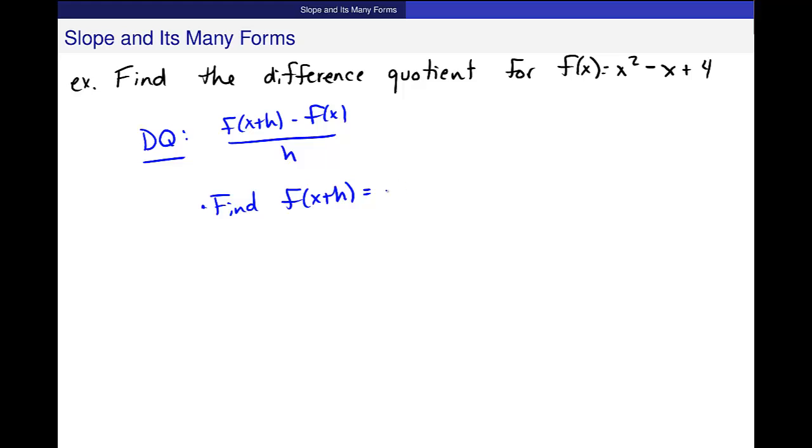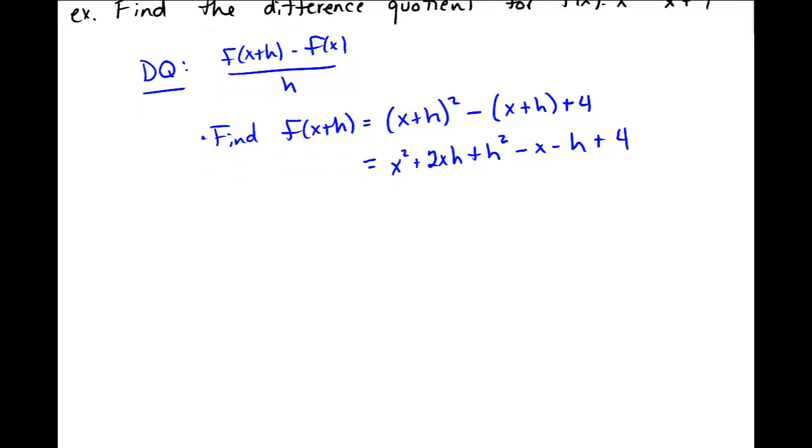And so I plug in x plus h everywhere I see x in the problem. So I get (x + h) quantity squared minus the quantity (x + h) plus 4. And now I'm going to FOIL out this (x + h) squared to get x squared plus 2xh plus h squared. I'll distribute this minus: minus x minus h plus 4. I don't think anything will combine here. And I'll go ahead and put that into the actual difference quotient.